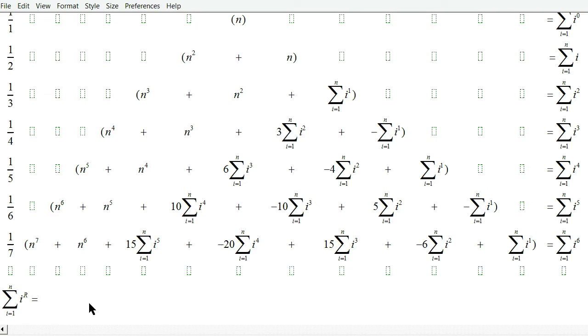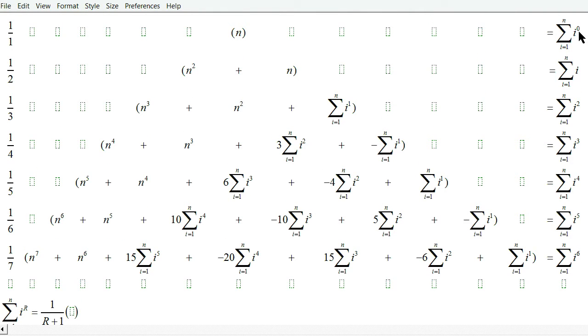So therefore, what I'm going to do is just write 1 over r plus 1. And I'm going to say times. With the exception of the sum of i to the 0 power, all other ones have n squared plus n or n cubed plus n squared and so forth.